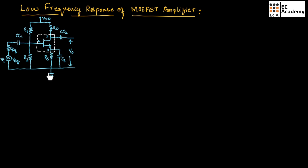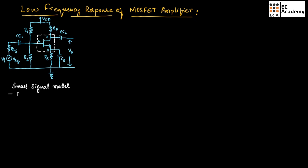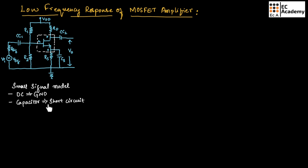Once we consider the voltage divider bias circuit, we need to write the AC equivalent circuit or small signal model. To write the small signal model, the DC source should be connected to ground and the capacitors should be short circuited. Since we are discussing low frequency response, this depends on the external capacitances connected in the amplifier circuit. The DC components will be connected to ground but we will not short circuit the capacitors, as we require them for calculation. We retain the capacitors as they are.